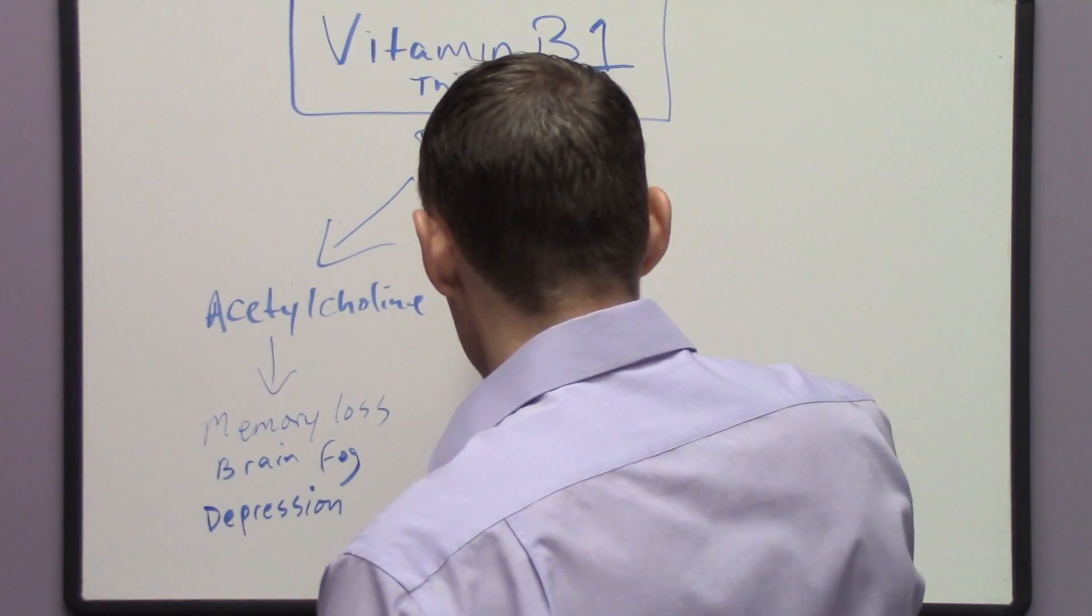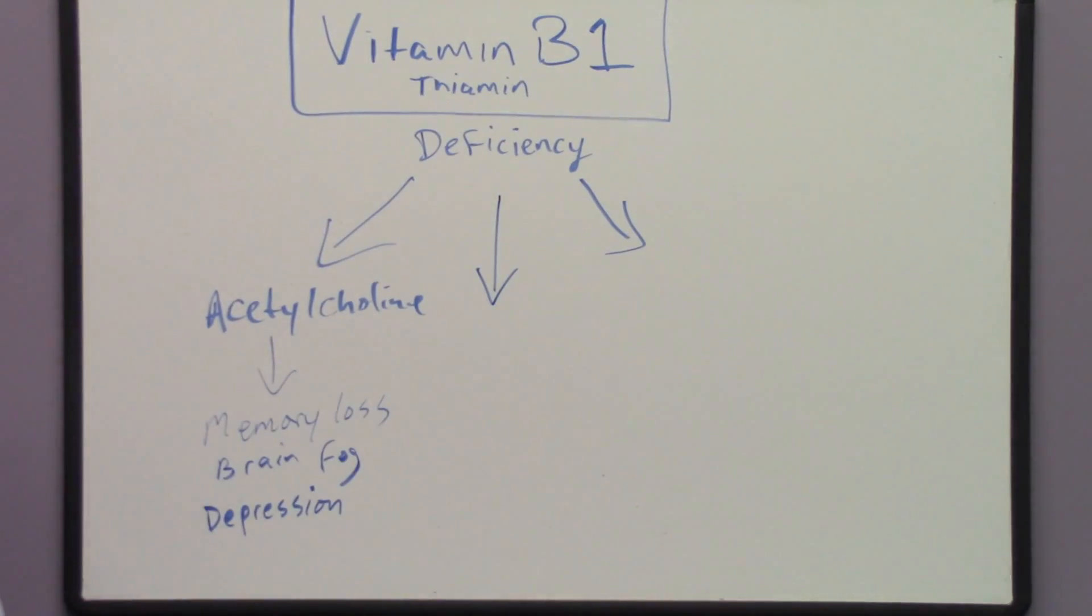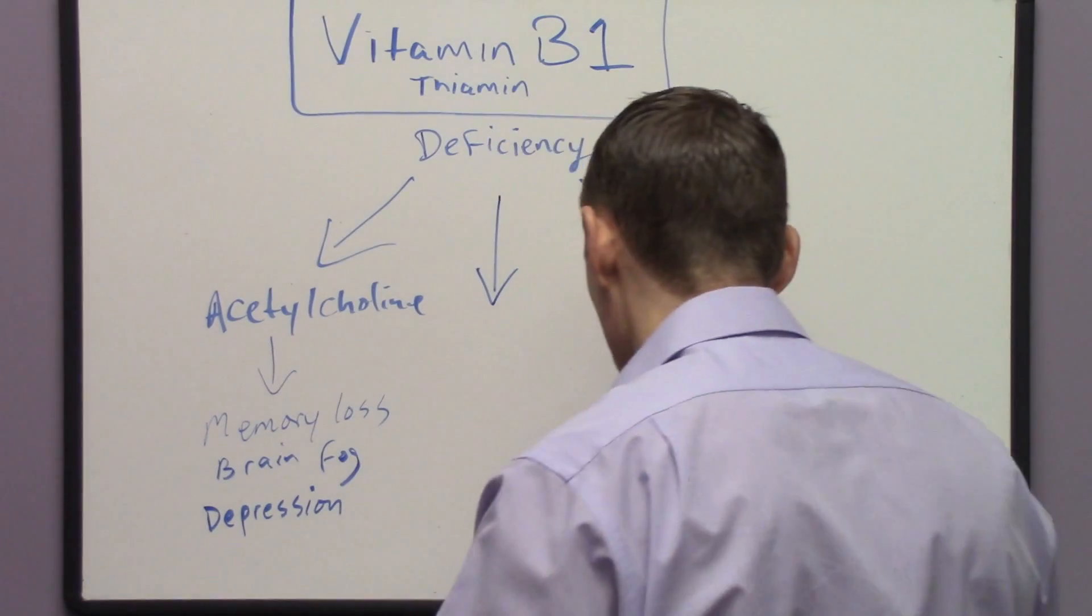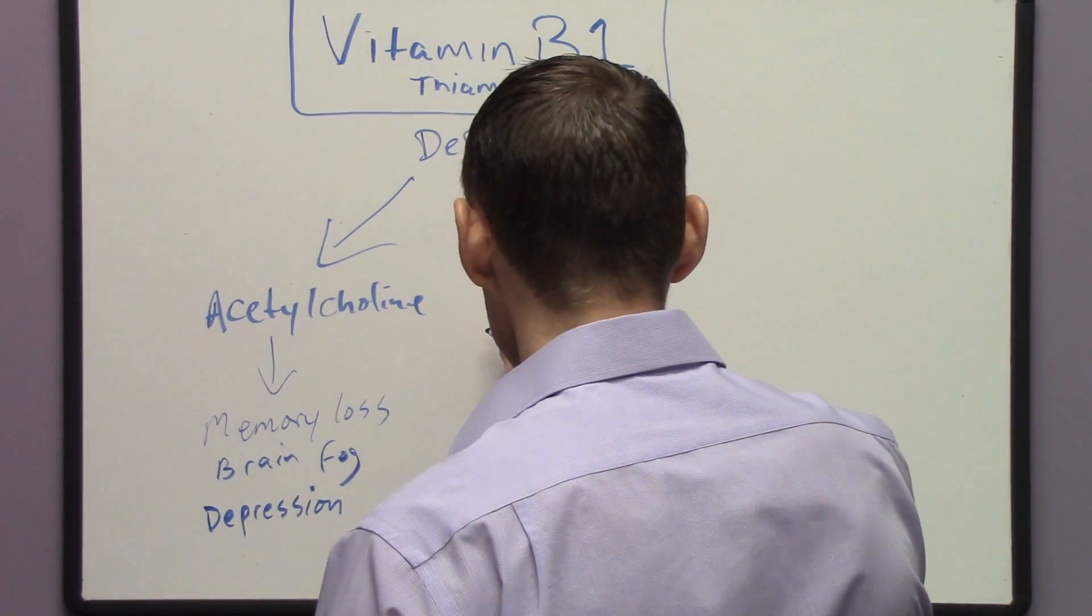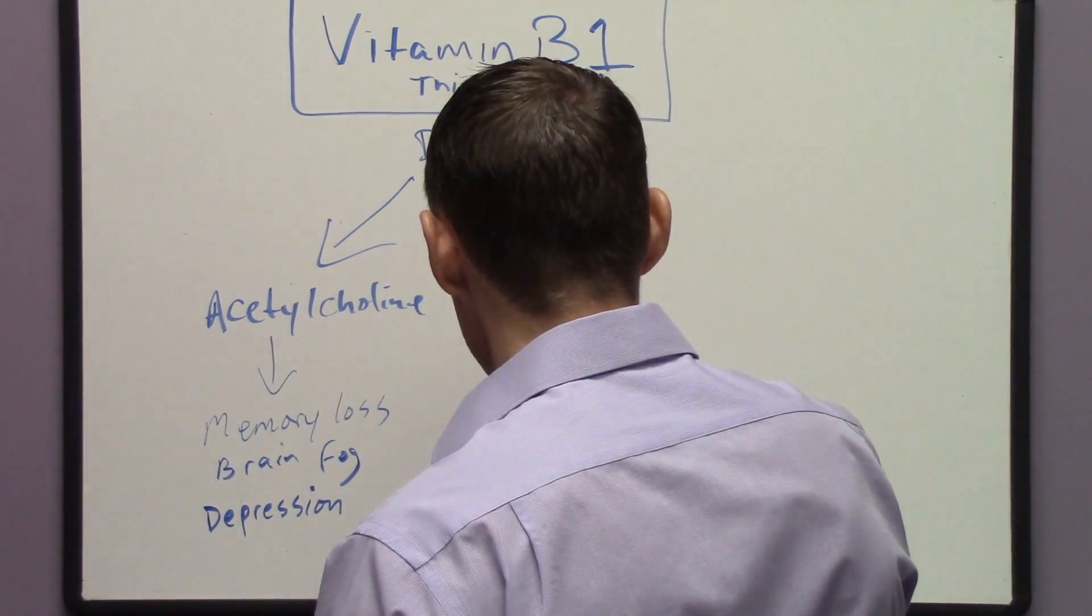One of the other components to vitamin B1 deficiency that also affects the nervous system has to do with generalized nerve damage itself.